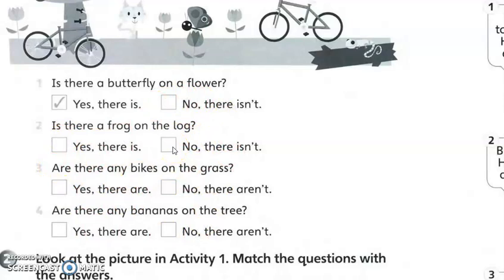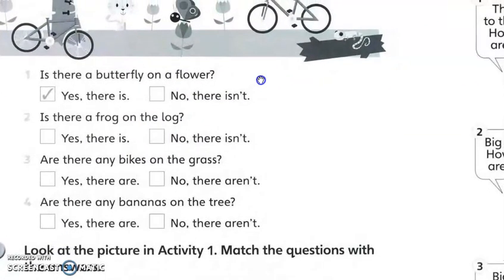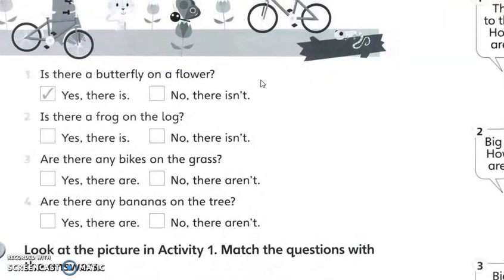Okay, lepas tanda, ataupun tu dah siap. Bagian dia buku boleh, buat dalam ni tak ada buku tak ada masalah. Sebab hari ni tak perlu untuk salin dan sebagainya. Kamu cuma rakamkan suara, audio. Baca yang ni: Is there a butterfly on a flower? Yes, there is. Okay, number 1. Number 2: Is there a frog on the log?